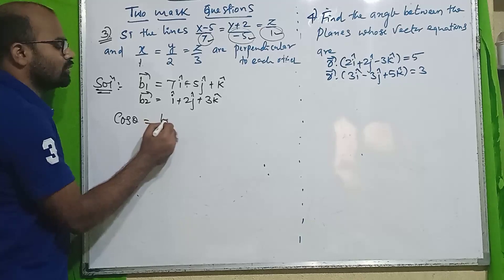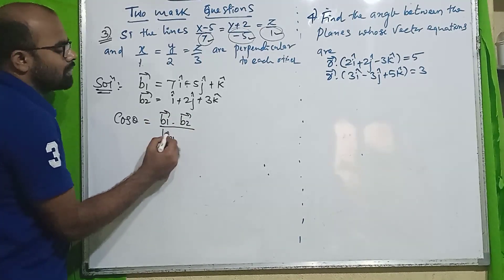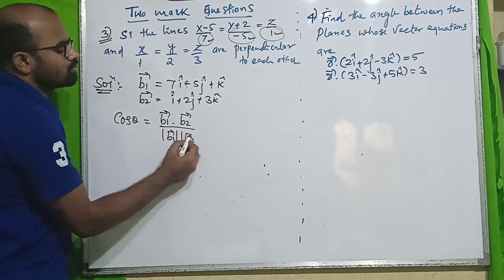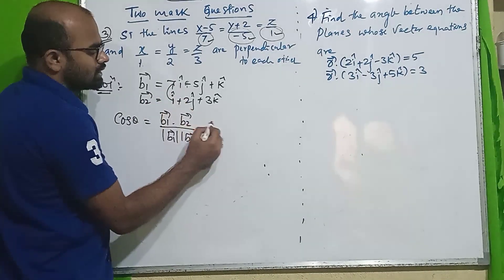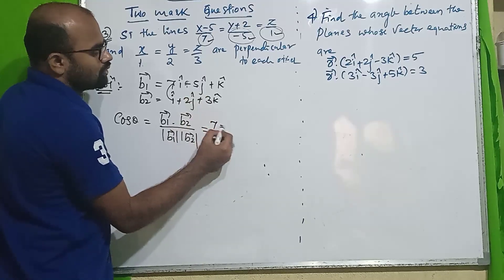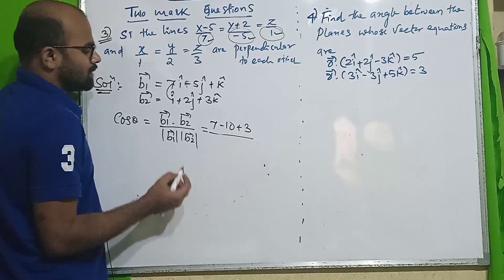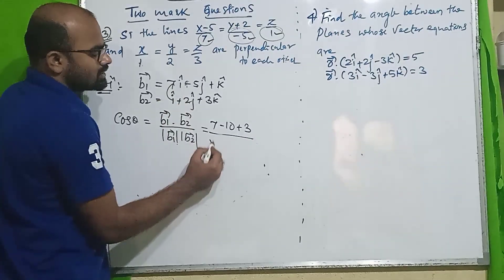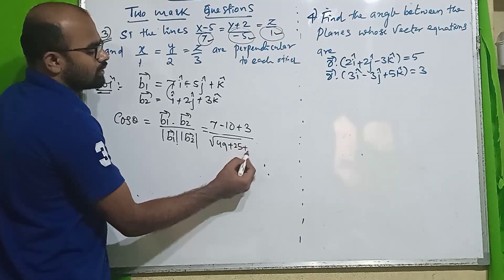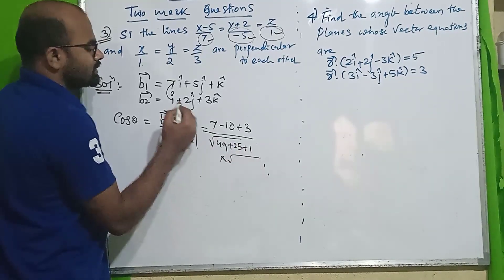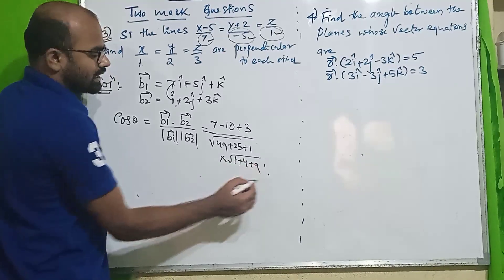I want cos θ. Cos θ = b1 · b2 divided by mod of b1 into mod of b2. Computing b1 · b2: 7 into 1 = 7, −5 into 2 = −10, 1 into 3 = 3. Divided by the magnitude: 7² = 49, 5² = 25, 1² = 1, into 1² + 2² + 3² = 1 + 4 + 9.